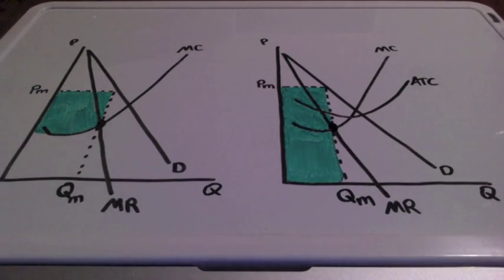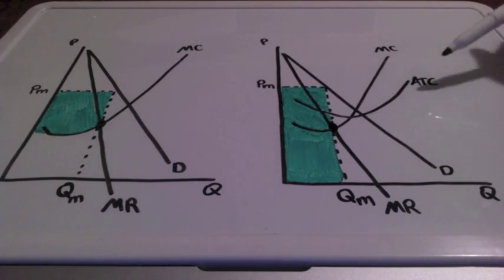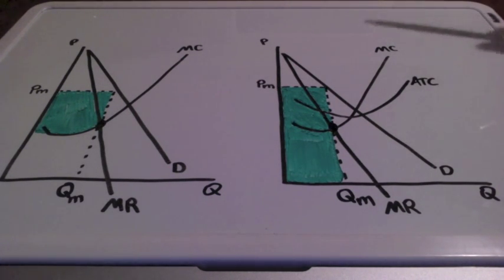Now, for identifying a firm's total revenue, we must also bring in the average total cost curve. And once we bring in the average total cost curve, we can identify profits, and we can also identify all of our costs.